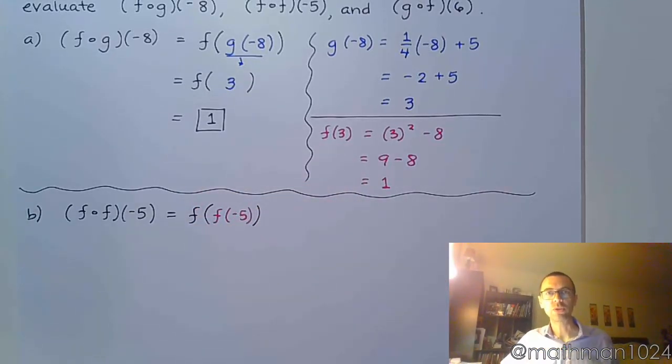So what negative 5 is going to do is negative 5 is going to go into f, and that's going to give you an answer. And then that answer is going to go back into f, right? Sounds kind of weird and crazy, but let's see what happens.